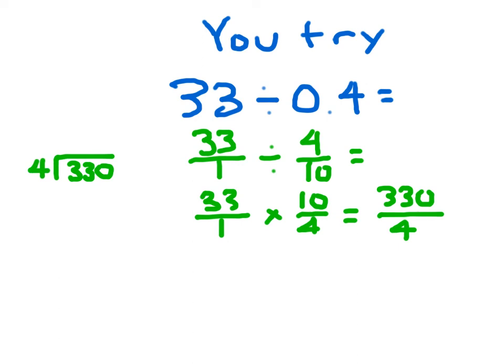330 divided by 4. 4 goes into 33 eight whole times. You'll notice that I placed my 8 directly above that other 3, the 3 in the tens place. 8 times 4 is 32, 33 minus 32 is 1. Bring down the 0. 10 divided by 4 is 2, because 2 times 4 is 8, and 10 minus 8 is 2. I don't put a remainder. I add a decimal place there. Did you remember to add that decimal place? Bring down the 0, and 20 divided by 4 is 5.